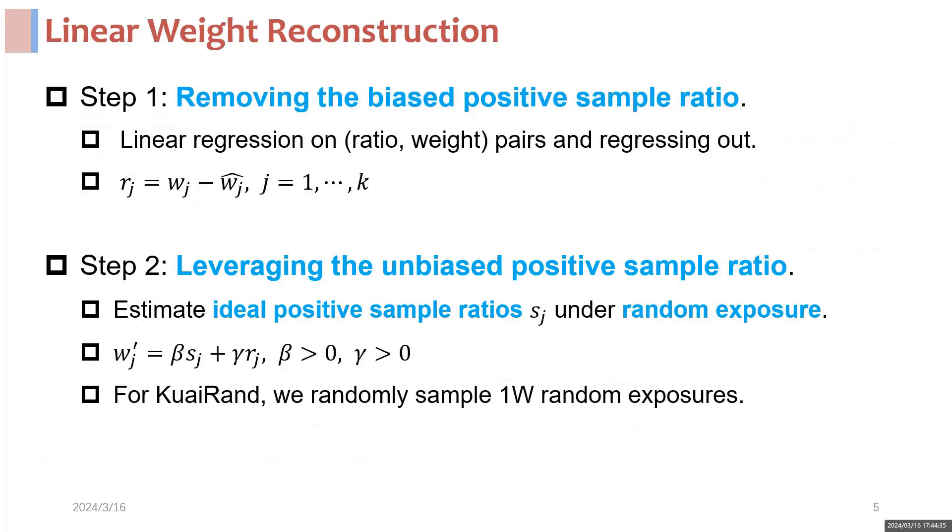Additionally, in some scenarios where limited unbiased data is available, we can further set the target of post-training adjustment as approaching the expected linear weights as learning CTR models from the unbiased data. This process consists of two parts: removing the biased positive sample ratios from linear weights and estimating the ideal ratios under the random exposure to make the linear weights unbiased.